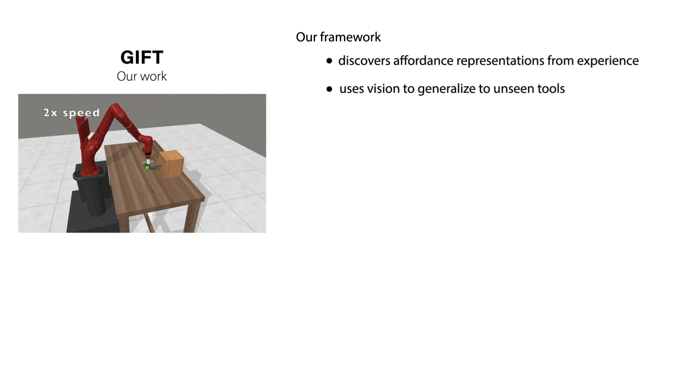We've presented GIFT, a framework for tool affordance learning that discovers affordances from interaction experience and uses vision to generalize the discovered affordances to new tools. It does this without relying on human labels, which can be expensive and introduce bias, or predefined motion primitives that limit affordance discovery.